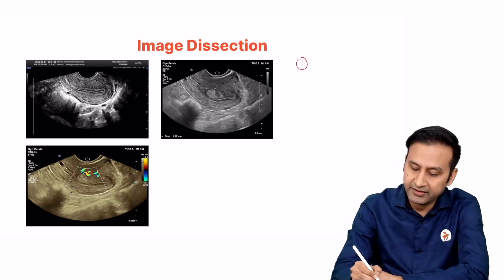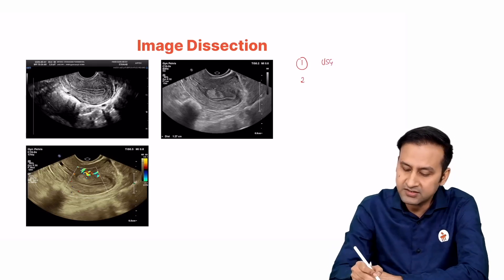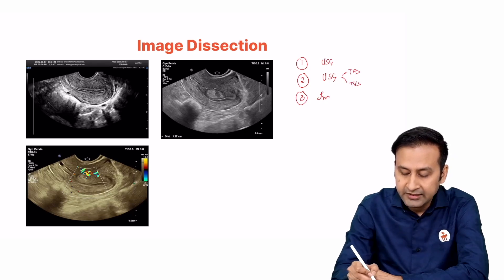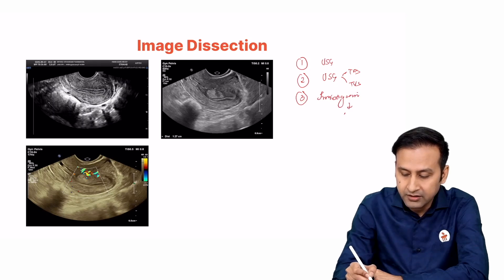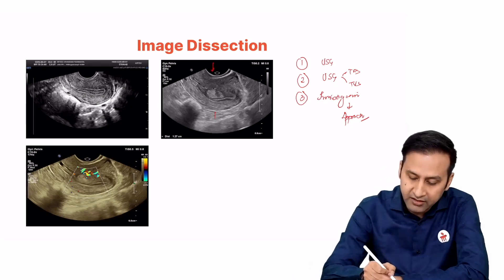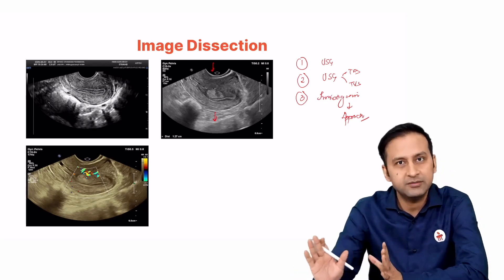First, identify the investigation — that is going to be USG in these cases. Second, identify the type of USG. Once you have decided whether it is a transabdominal or transvaginal scan, in the third section, look at the USG in an approach-based manner, starting from one direction and going to the other until we see the image completely.